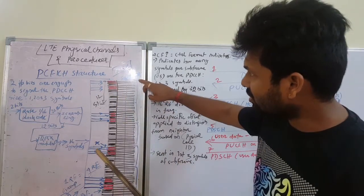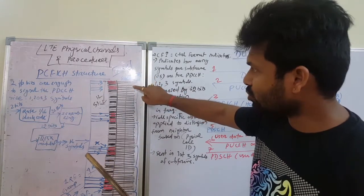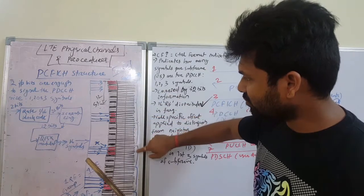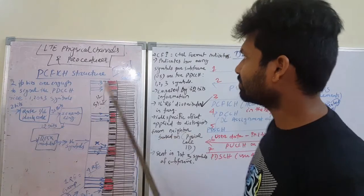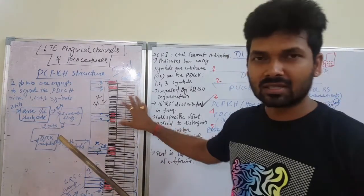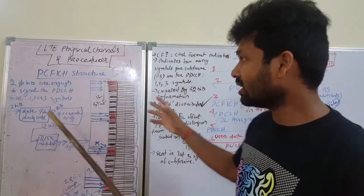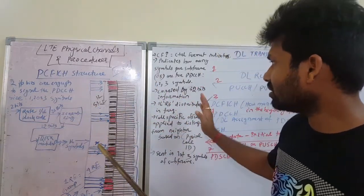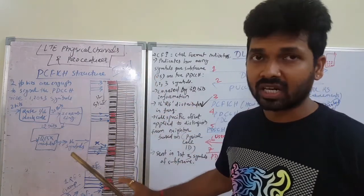and from here to here these are 12 subcarriers, that means one resource block. 1, 2, 3, 4, 5, 6 - this mid one is the DC. So 72 carriers or 6 resource blocks. We have taken this example, we can take other examples also to understand. 16 resource elements are distributed along this 72 subcarrier for